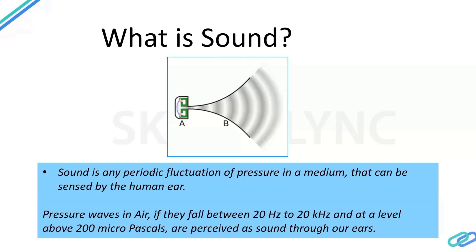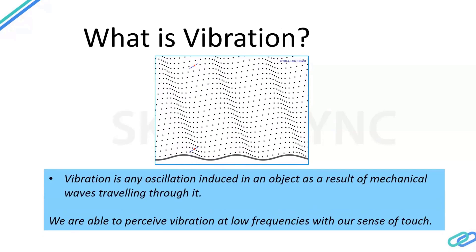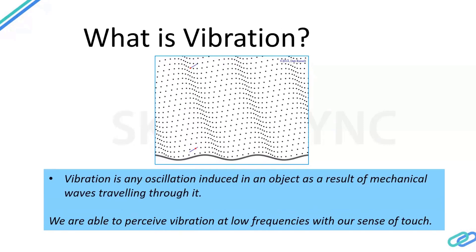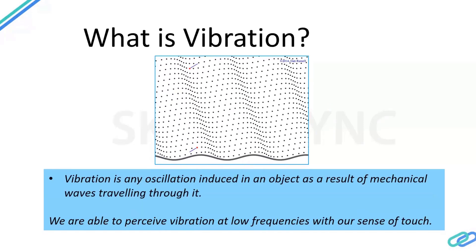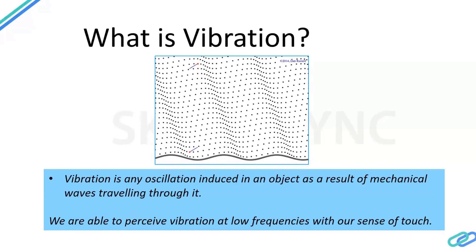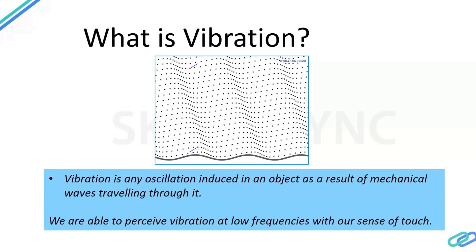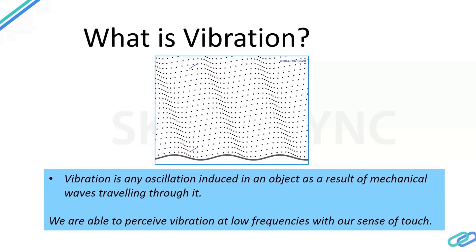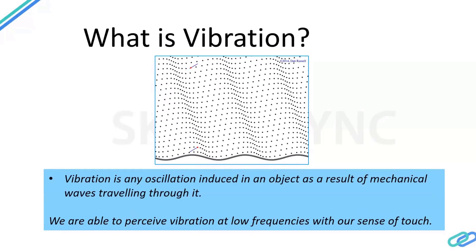Similarly, what is vibration? In vibration, the particle has net zero displacement - the particles in a solid medium have a periodic oscillation about a mean position. It is basically a result of mechanical waves traveling through a solid medium. We are able to perceive vibration at very low frequencies. If you touch a moving motor or the body of a fan, you notice you can feel vibration. Our sense of touch can feel vibration only up to about a couple of hundred hertz.